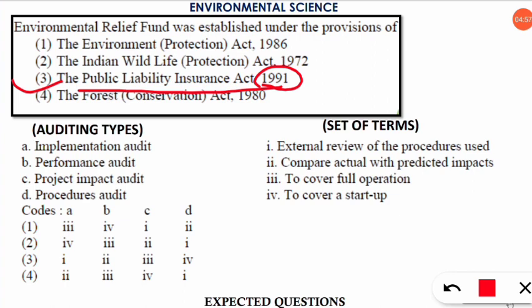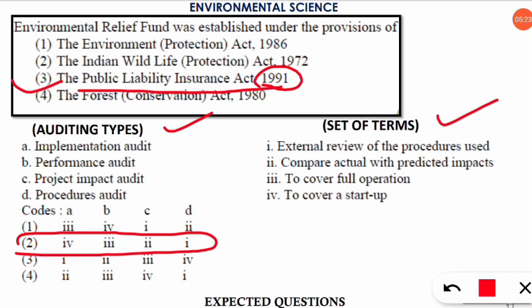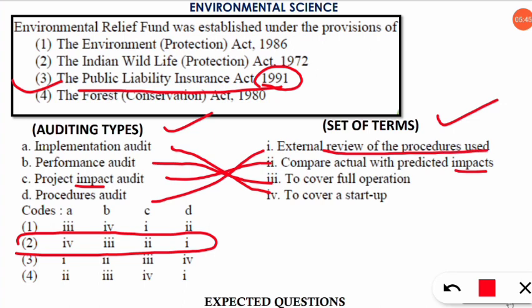The next question is also a match-the-following, as this type is usually asked from Unit 8 of the NET environmental science paper. The left side gives audit types; the right side gives descriptions. The correct option is option number two. Implementation audit matches its corresponding term; performance audit covers full operation; project impact audit matches with comparing actual with predicted impact; procedures audit matches with external review of procedures used.